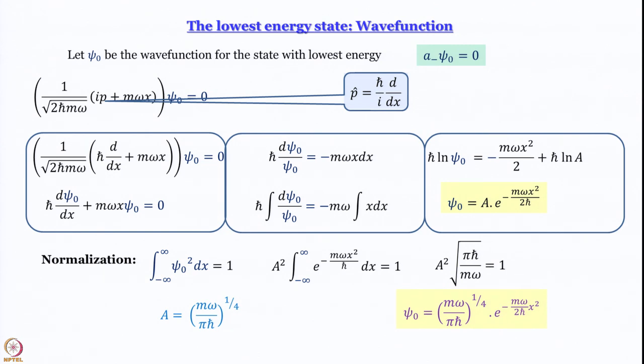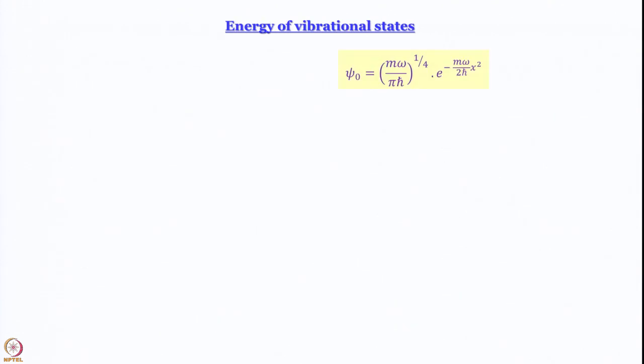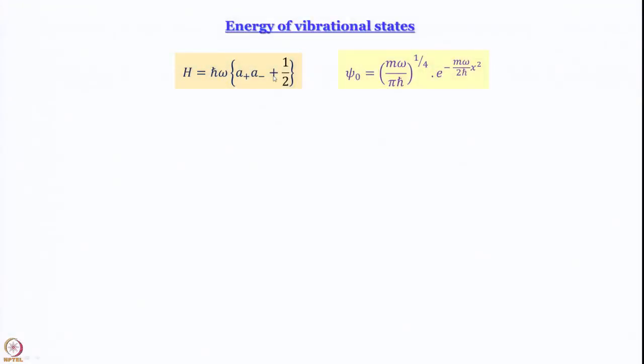The next step is to find the energy. Since we know the wave function, we make the Hamiltonian operate on it, and the energy emerges as the eigenvalue. We use the convenient form of the Hamiltonian with ladder operators. We could have used the differential form, but the ladder operator form is more suitable here. So H = ℏω(a_plus·a_minus + 1/2) is the form we will use.